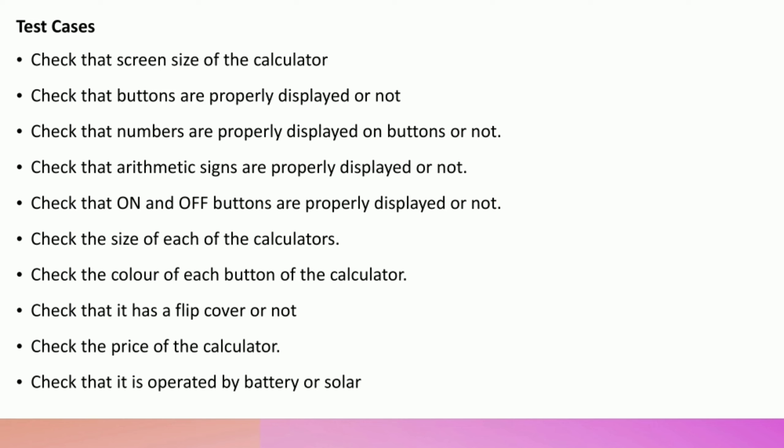Check that numbers are properly displayed on buttons or not. Check that arithmetic signs are properly displayed or not. Check that on and off buttons are properly displayed or not. Check the size of each button of the calculator. Check the color of each button. Check that it has a flip cover or not. Check the price of the calculator. Check that it is operated by battery or solar.